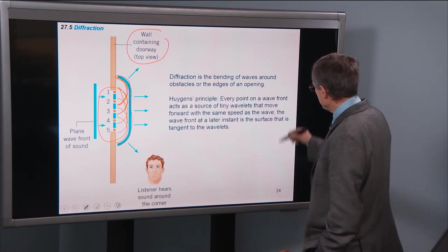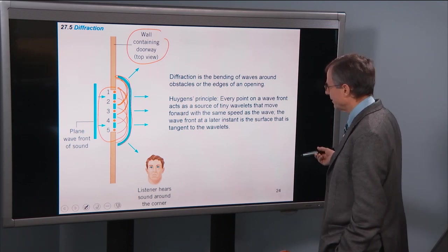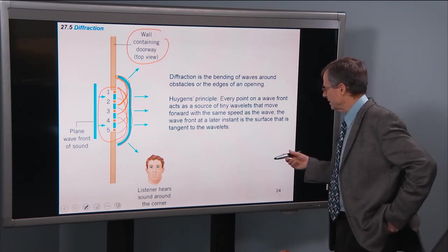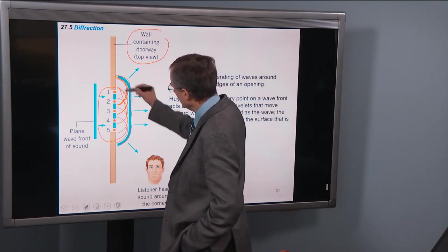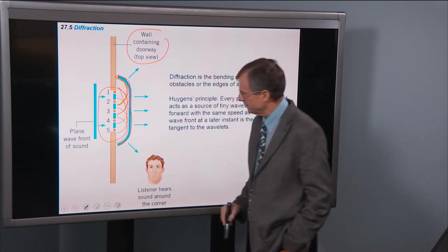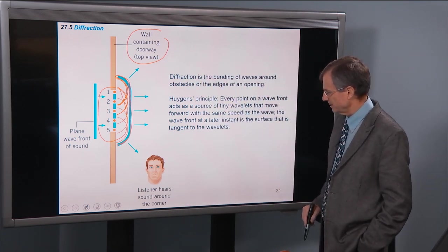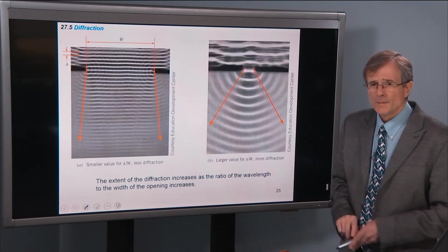And so every point in a wavefront acts as a source of tiny wavelets that move forward at the same speed as the wave. The wavefront at a later instant is the surface that's tangent to the wavelets. So you're talking about all these little wavelets, and this wavefront is tangent to all those wavelets.